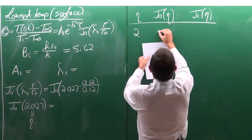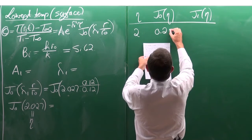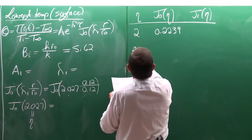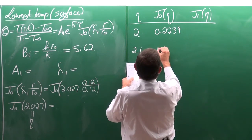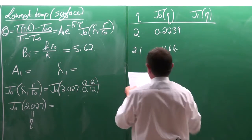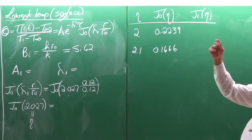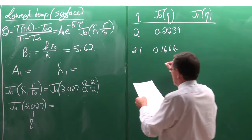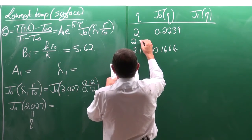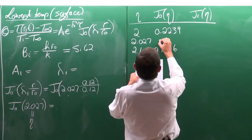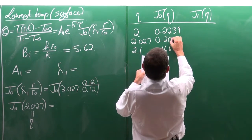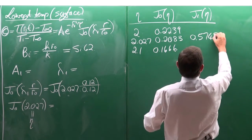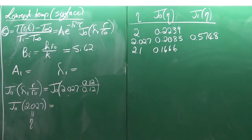From table 4.3, for η = 2.0, J₀(2.0) = 0.2239; for η = 2.1, J₀(2.1) = 0.1666. You don't need to interpolate in tests — use the closest value (η = 2). Computing precisely for η = 2.027 gives J₀ = 0.2083, and J₁(2.027) = 0.5748. We will use J₀ = 0.2083.